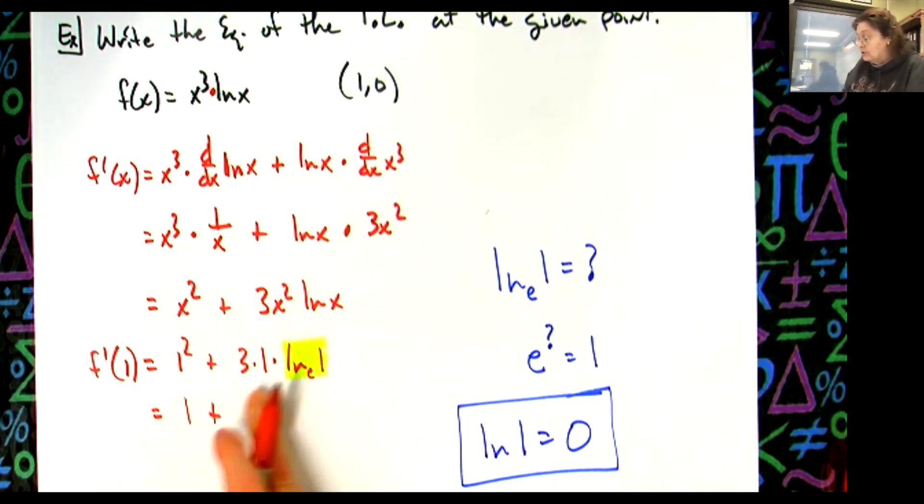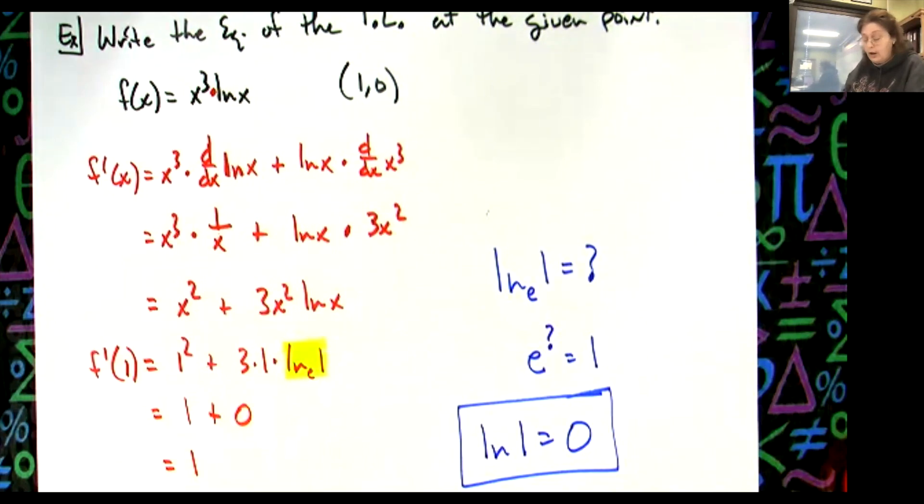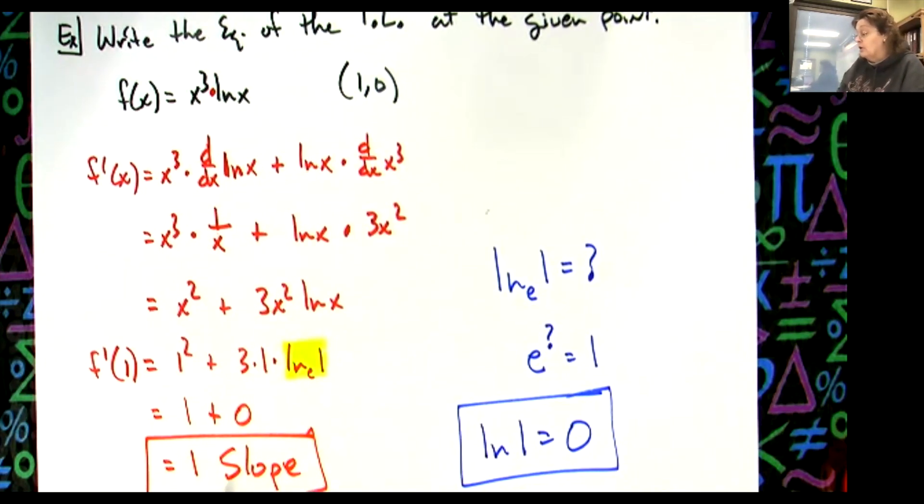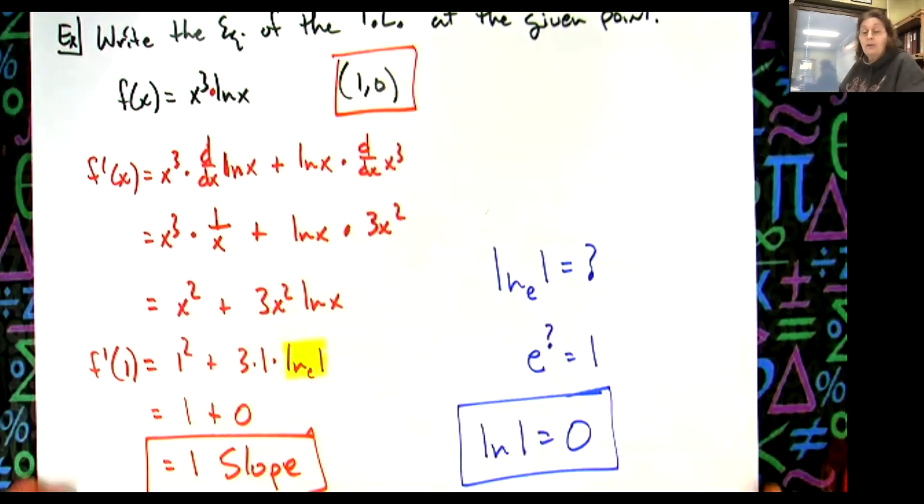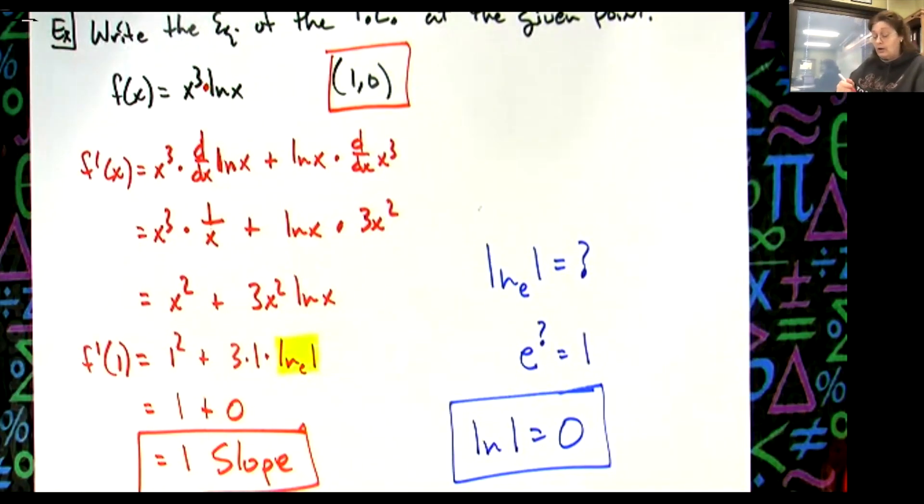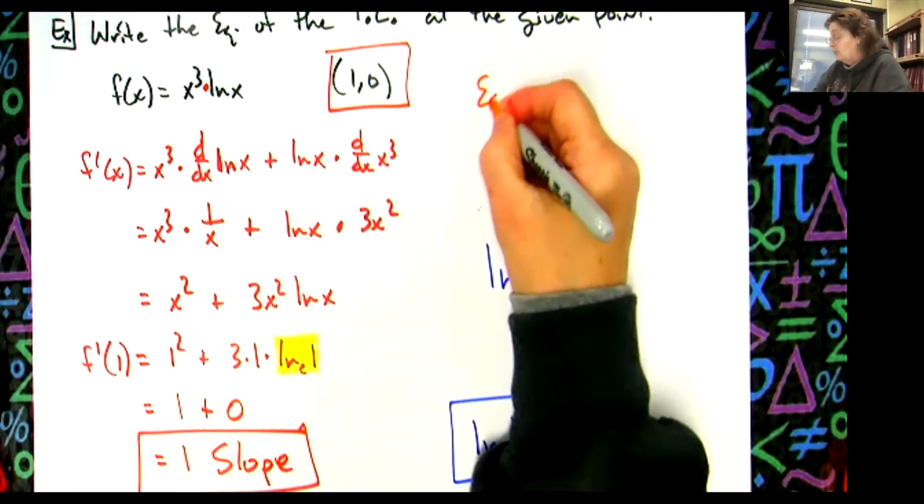Okay, so I've got a 1 plus 3 times 1 times 0. That's just going to be 0, so my slope then is 1. So I've got my slope, I've got my point. All right? If I have my slope and I have my point, then I should be able to write the equation of the tangent line in point slope form.